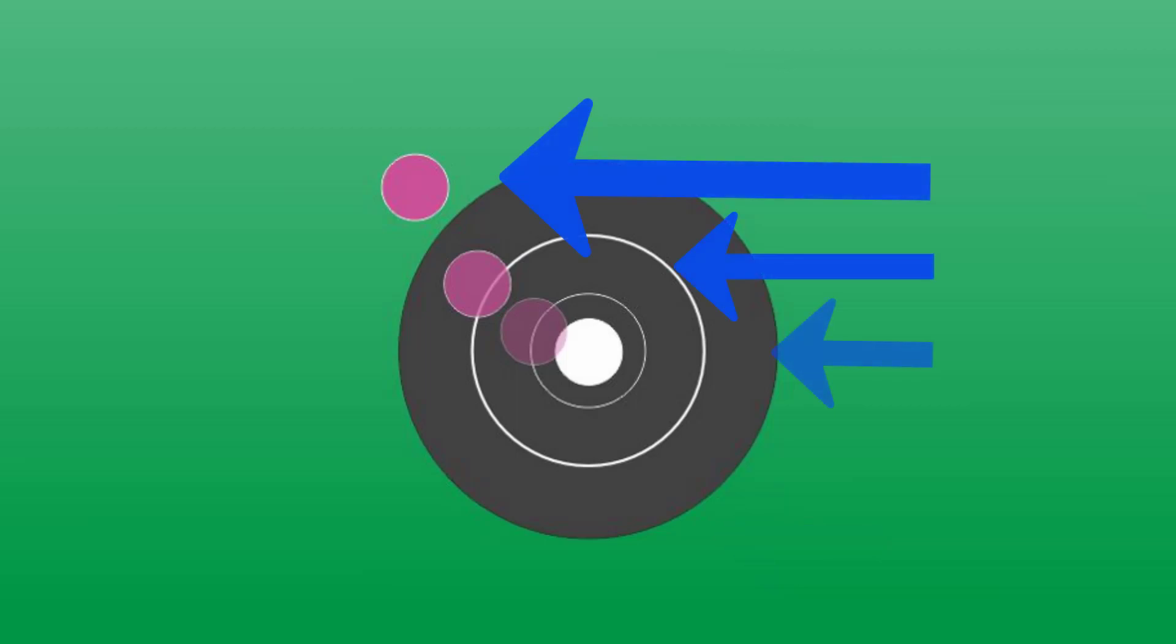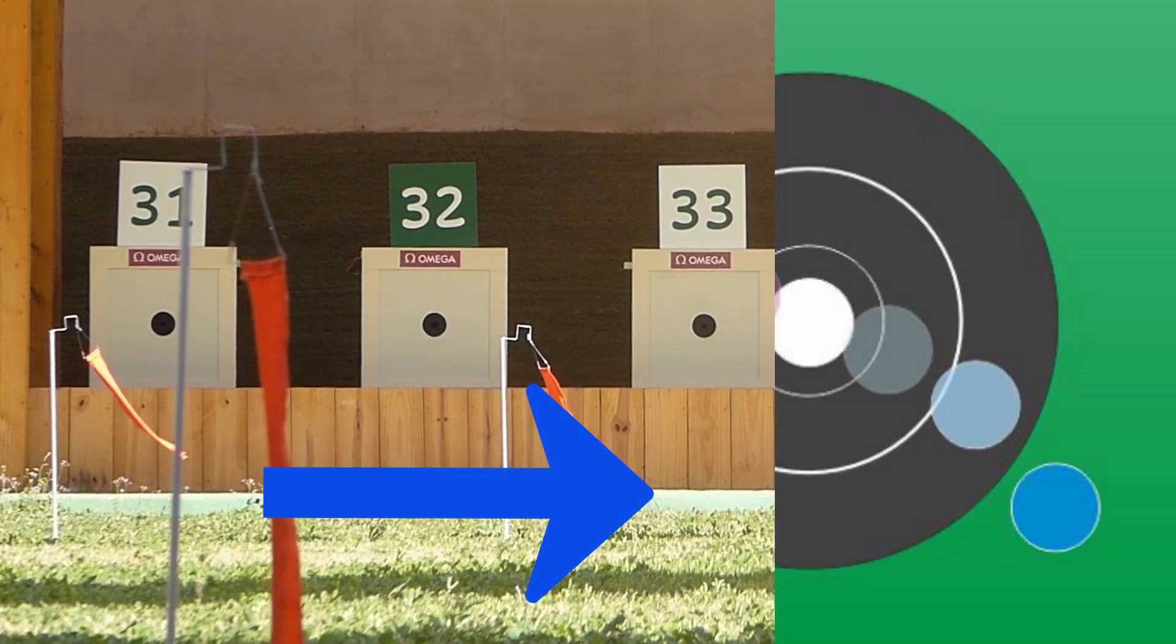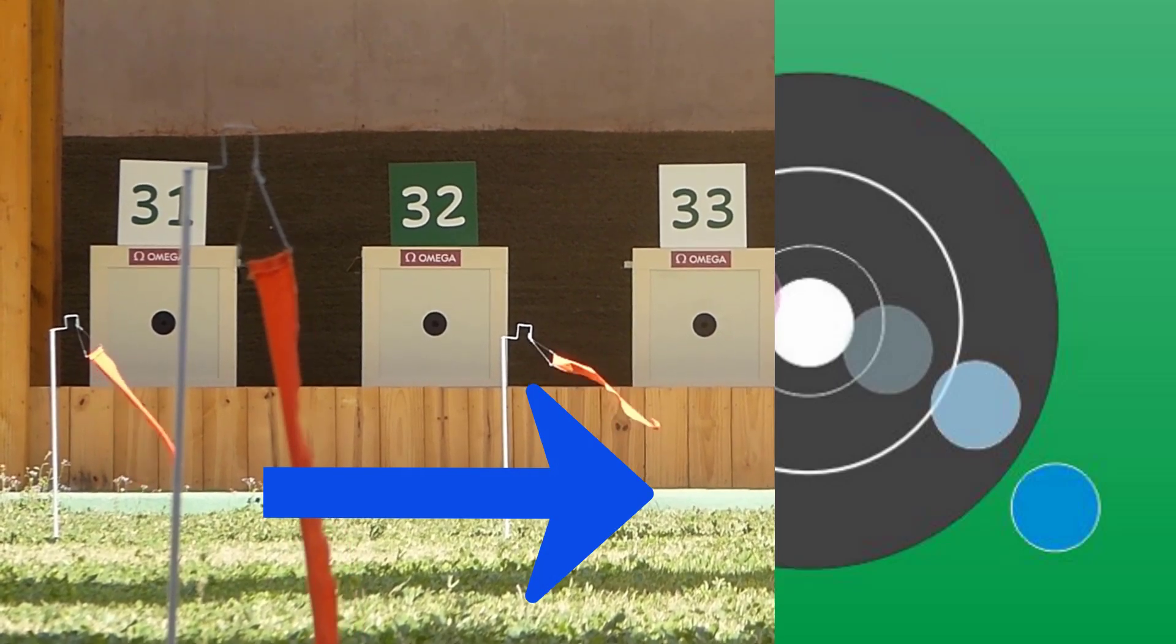If the wind blows from the right, the bullet rises to the top left. If the wind blows from the left, the bullet sinks to the bottom right.